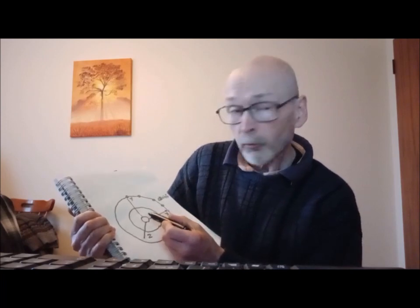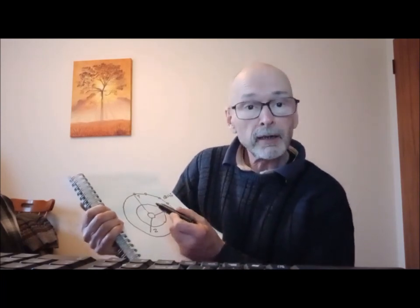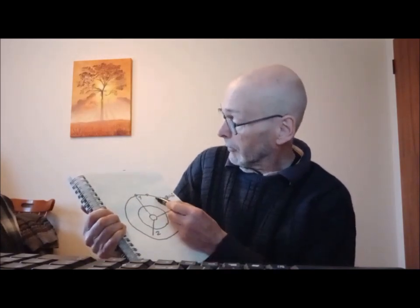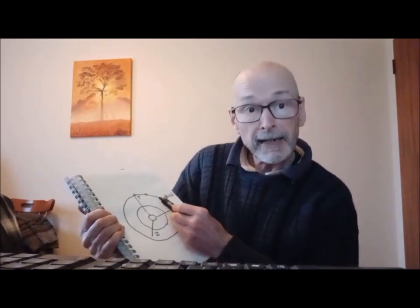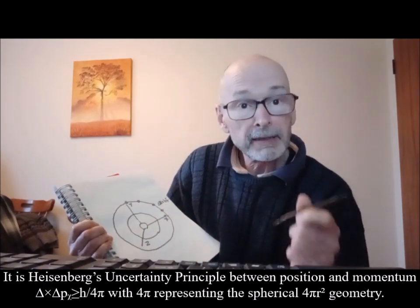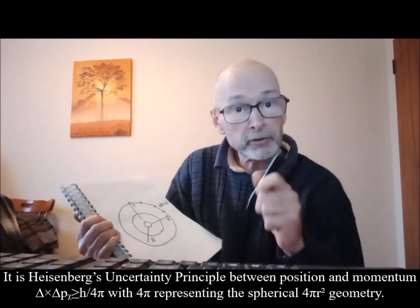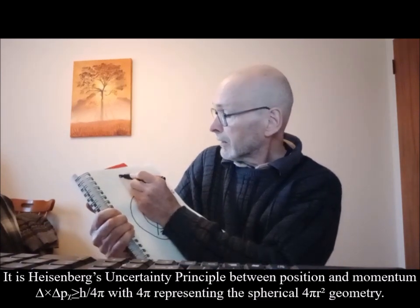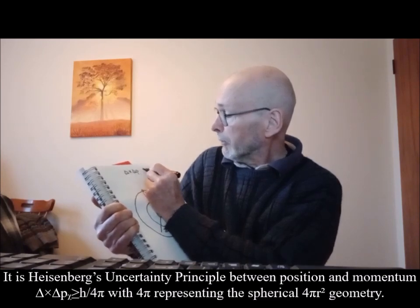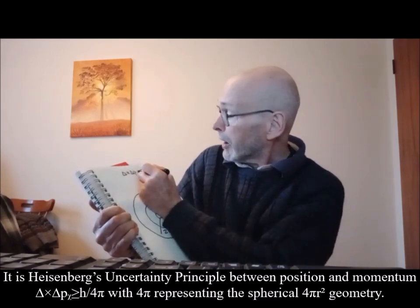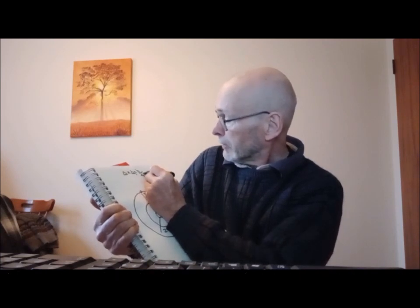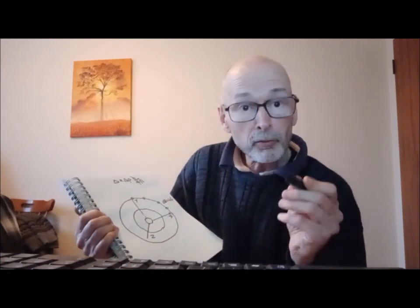This forms uncertainty between position along the wave front and momentum of the radiating energy radiating out from the centre. This can be seen mathematically as Heisenberg's uncertainty principle between position and momentum, with 4pi in the equation representing the spherical geometry.